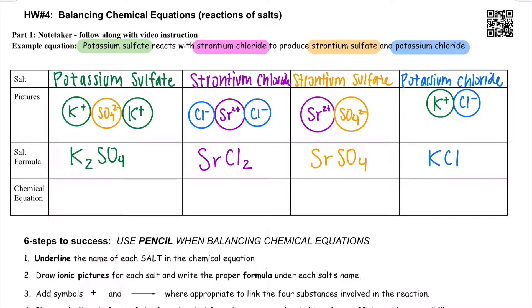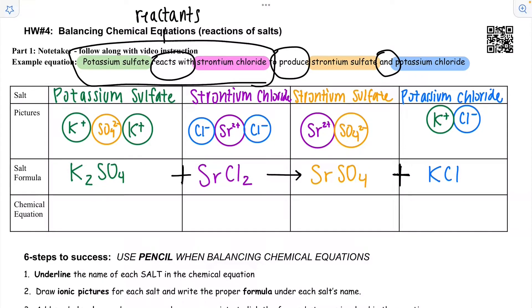Next step is to add the plus signs and the arrow where appropriate to link our salts in our sentence. Anywhere where you see reacts with or an and or is mixed with, that's going to be a plus. I'm putting together potassium sulfate and strontium chloride and I'm also on the other side producing strontium sulfate and potassium chloride. To divide the two sides we need an arrow. Anywhere where you see produces, yields, makes, that would be an arrow. That divides the reactants, everything over here, from the products which are on this side. And that arrow divides the two.